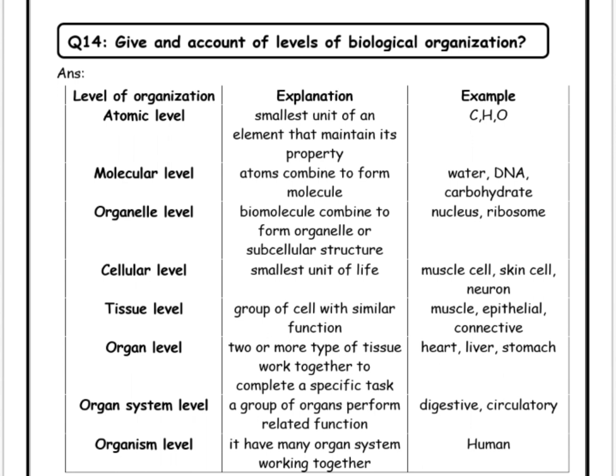The atomic level is the smallest unit of an element that maintains its properties. Examples are carbon, hydrogen, and oxygen. Atoms combine to form molecules, and different types of biomolecules are present in living organisms, such as water, DNA, and carbohydrates.